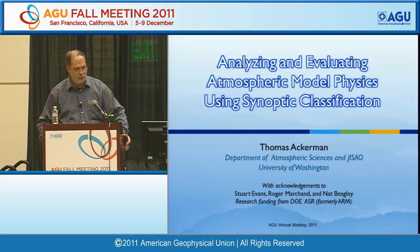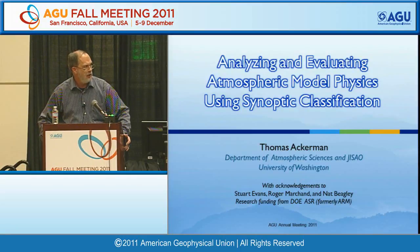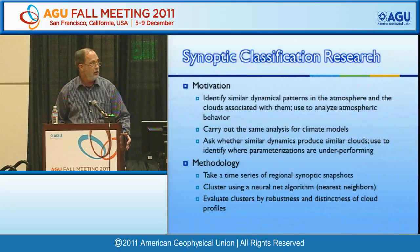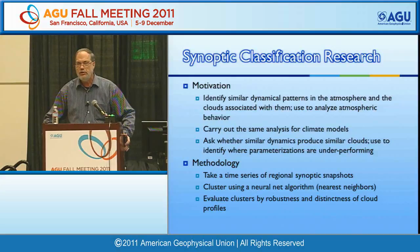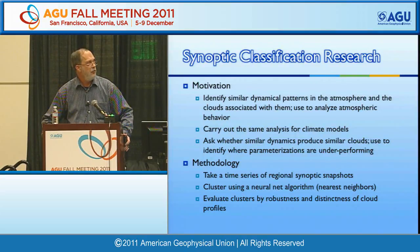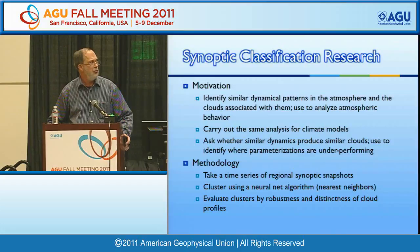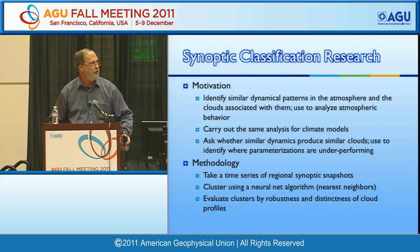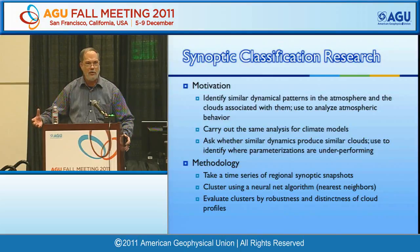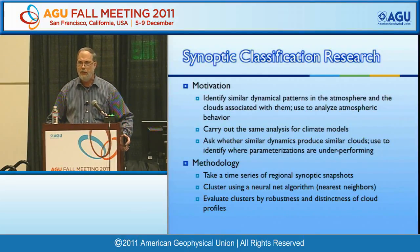I'd like to talk about some work we're doing using synoptic classifications to try and understand cloud parameterizations. I want to acknowledge particularly Stuart Evans, Roger Marchand, and Nat Begley. The motivation arose out of trying to understand how we might use ARM data from single ground locations to look at cloud parameterizations. Basically, we set out to separate the influence of dynamics and cloud parameterizations in models by classifying dynamical patterns in the atmosphere and looking at the clouds associated with those dynamical patterns.